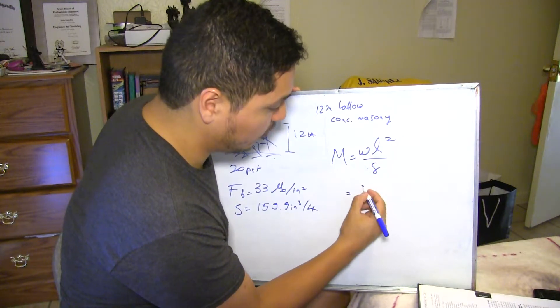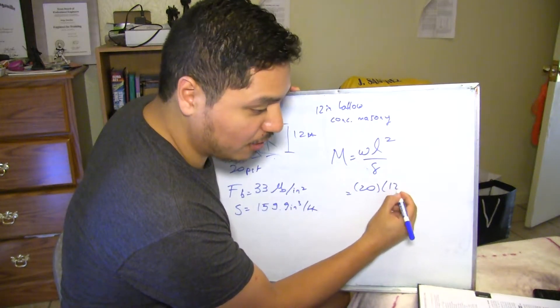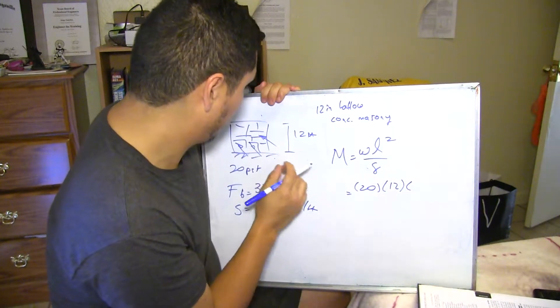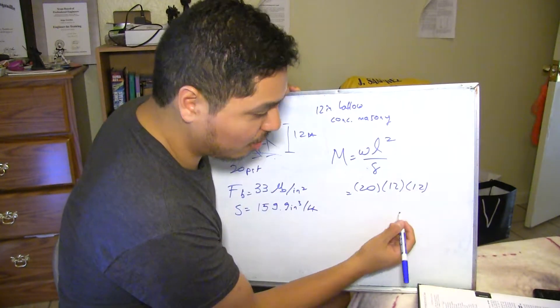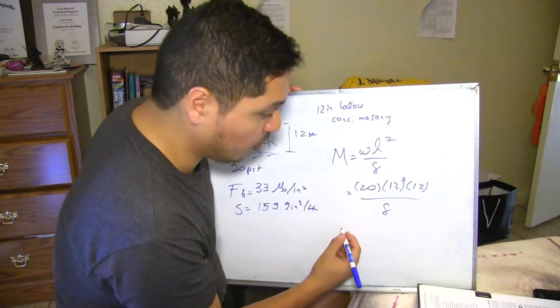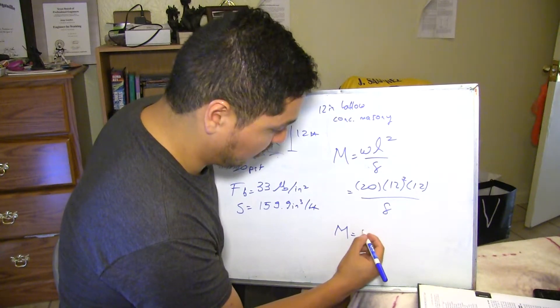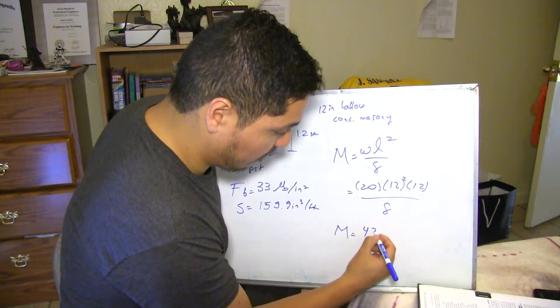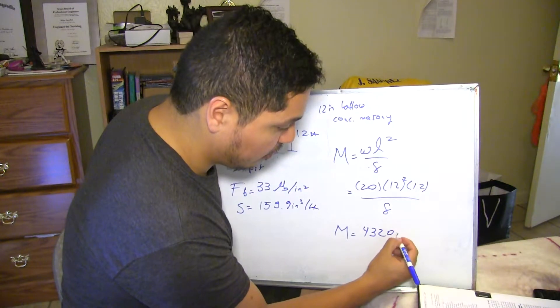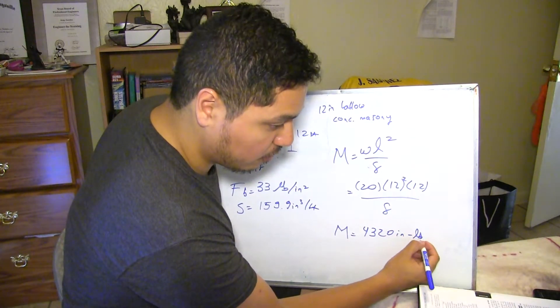So you have your 20 PSF of wind times 12 feet, that is the height, times 12 feet. Basically, you're converting into kind of like a point. And then again, this will give you your maximum moment that this wall is taking, right? It's going to be 4,320 inch-pounds or foot-pounds.